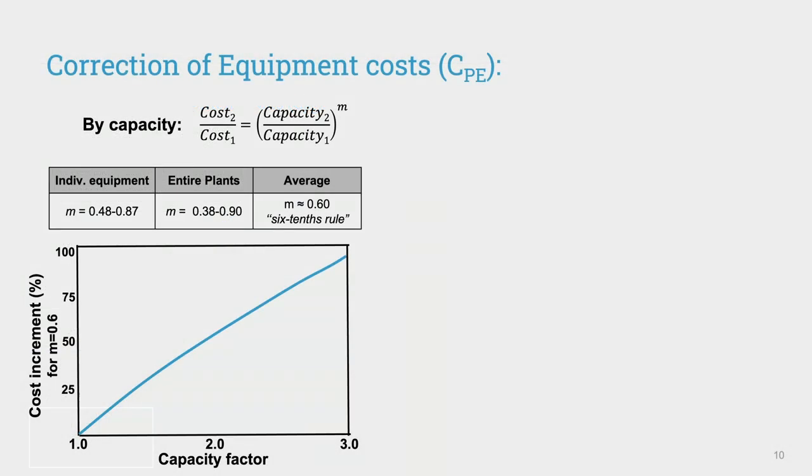In this case, if the capacity factor doubles, the cost increment is 52%, but if the capacity factor triples, the increment would be 93%. Those increments in the capacity factor should still be realistic.